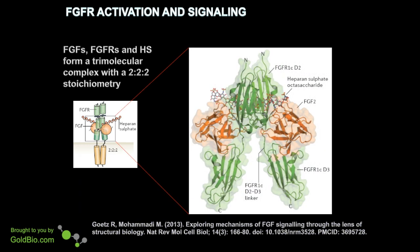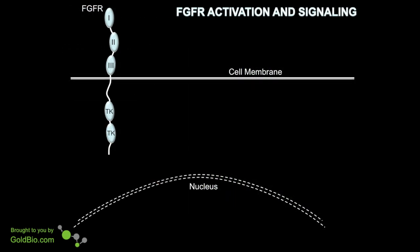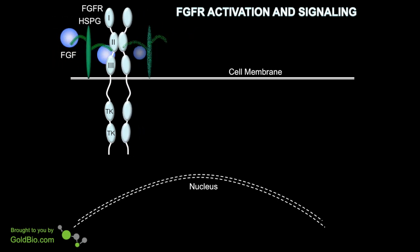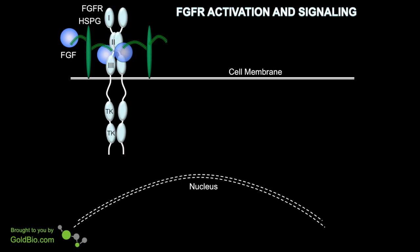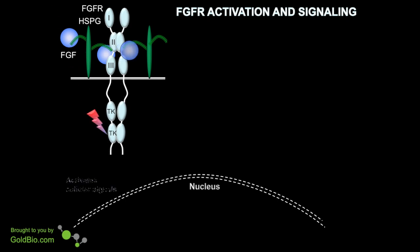The FGFs, FGF receptors, and heparin sulfate form a trimolecular complex with a 2-to-2-to-2 stoichiometry. If we expand this to look at the crystal structure, we can see that the FGF receptors, shown in green, are on the internal part of this macromolecular complex, and the FGF ligands and heparin sulfate are on the outside. FGF binding to the FGF receptor leads to dimerization and activation of the receptor. We have an FGF receptor shown here with the extracellular ligand binding domain and the intracellular tyrosine kinase domain. Heparin sulfate proteoglycans are complexed with the receptor, and FGFs bind to and induce dimerization of the receptor, leading to receptor activation and activation of intracellular signaling pathways.